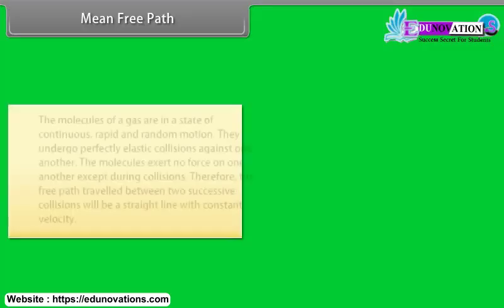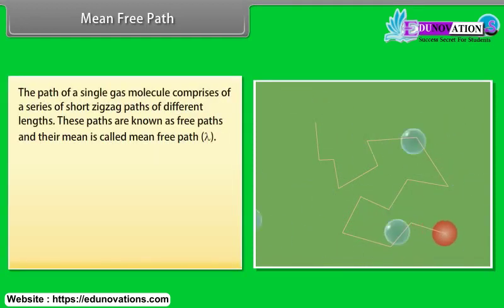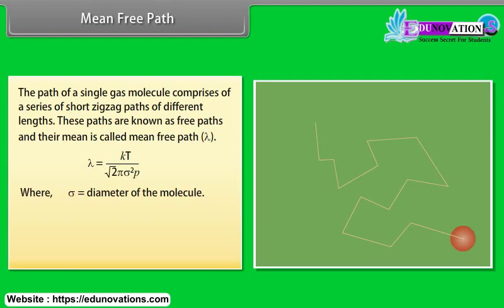Mean free path: The molecules of a gas are in a state of continuous rapid and random motion. They undergo perfectly elastic collisions against one another. The molecules exert no force on one another except during collisions. Therefore, the free path traveled between two successive collisions will be a straight line with constant velocity. The path of a single gas molecule comprises of a series of short zigzag paths of different length. These paths are known as free paths and their mean is called mean free path. Lambda is equal to KT upon root 2 pi sigma square P, where sigma is equal to diameter of the molecule, P is equal to pressure of the gas, T is equal to temperature of the gas, K is equal to Boltzmann's constant.